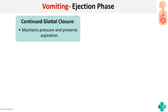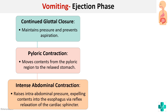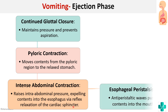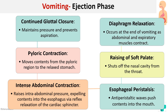In the ejection phase: continued glottal closure maintains pressure and prevents aspiration; pyloric contraction moves contents from the pyloric region to the relaxed stomach; intense abdominal contraction raises intra-abdominal pressure, expelling contents into the esophagus via reflex relaxation of the cardiac sphincter; anti-peristaltic esophageal waves push contents into the mouth; and the soft palate is raised to shut off the nasal cavity from the throat. Diaphragm relaxation marks the end of vomiting.